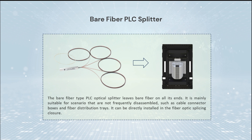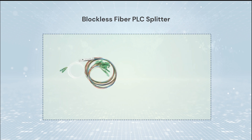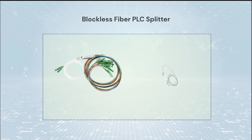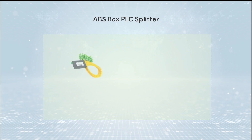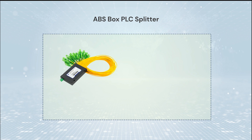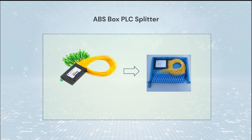The bare fiber type can be directly installed in the fiber optic splicing closure. The blockless fiber PLC splitter is packaged with a stainless tube with a connector at the bare fiber ends. It can be used in a variety of installation ways because of its small size and stronger packing.